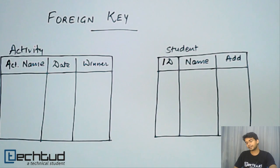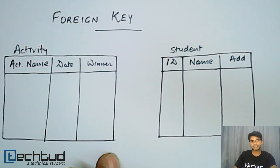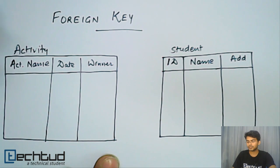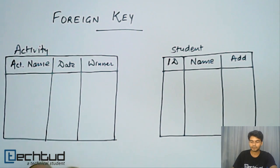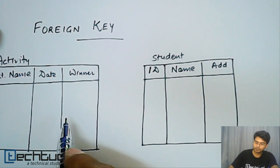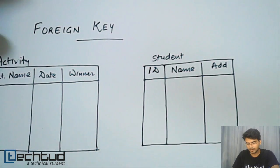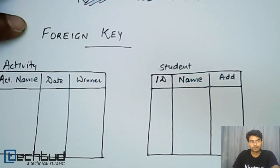Now I don't want to maintain all the records for a student in the activity table, like what is the name of student who has won that particular activity, from where the student belongs, which department and all those records. So what I will do, I will just maintain one of the key through which we can identify which student he is.